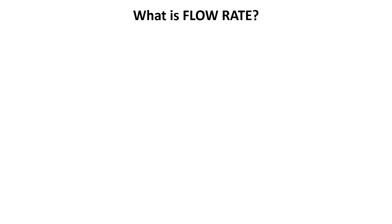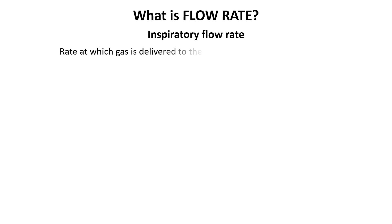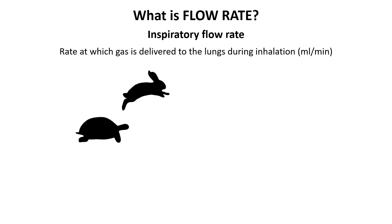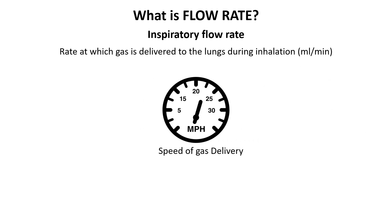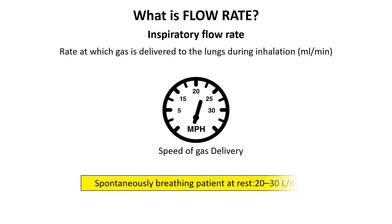A ventilator's flow rate, or inspiratory flow rate, is the rate at which gas is delivered to the lungs during inhalation. It gives us a measure of how quickly or slowly gas like oxygen is delivered to a patient's lungs. For a normal spontaneously breathing patient at rest, the typical inspiratory flow rate is around 20 to 30 liters per minute.